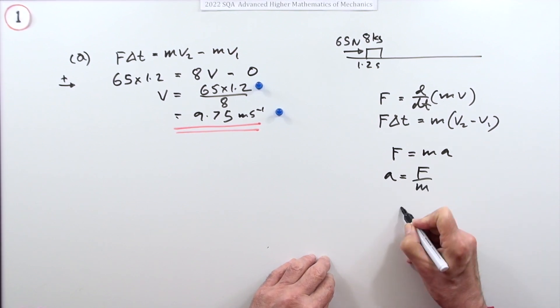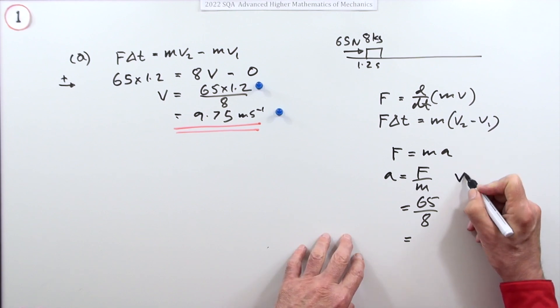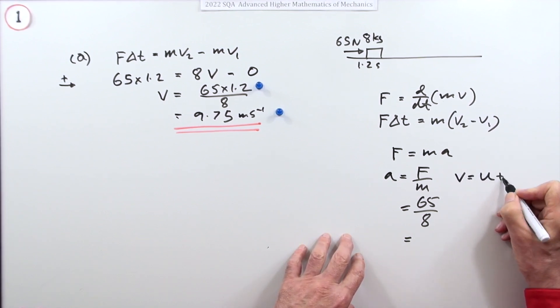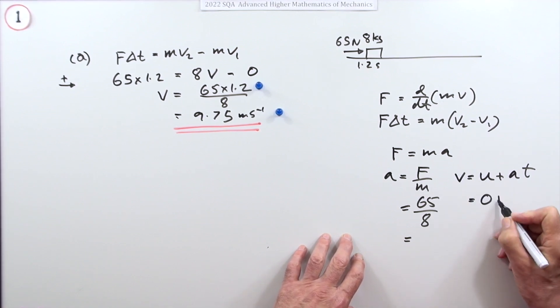And then having the acceleration you could then say, well, the final velocity will be the initial velocity—v equals u plus at. Started at rest, that was, I'll just keep that the way it was, 65 upon 8 times the time which is 1.2.